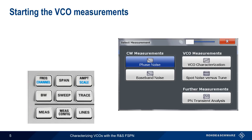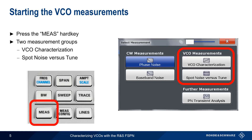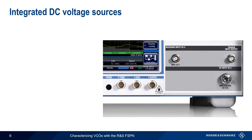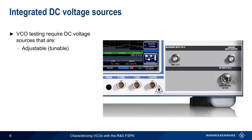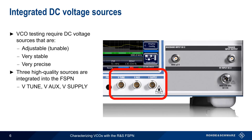To start VCO measurements on the FSPN, first press the Measure hard key on the instrument front panel. VCO measurements are divided into two groups: VCO characterization and spot noise versus tune. The FSPN has three high-quality DC voltage sources available via BNC connectors on the instrument front panel: V-tune, V-aux, and V-supply.